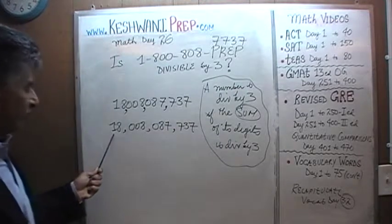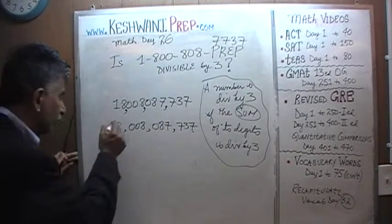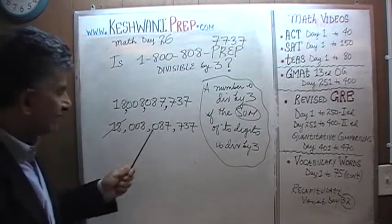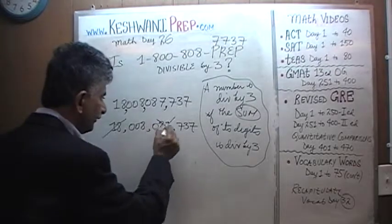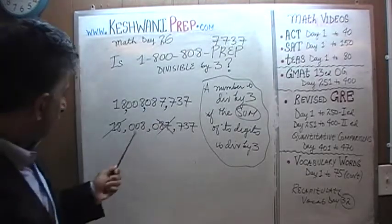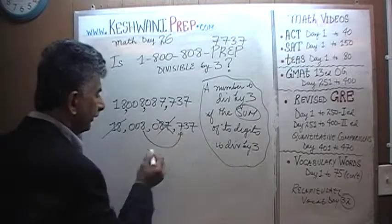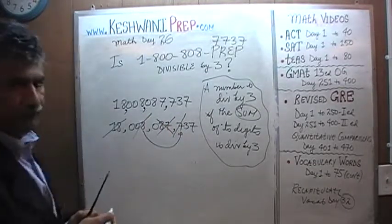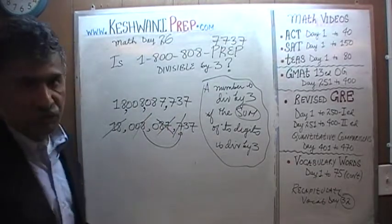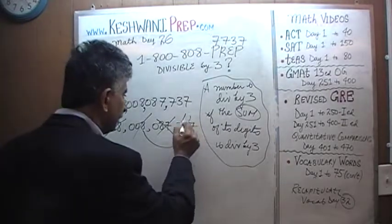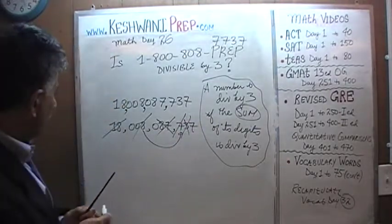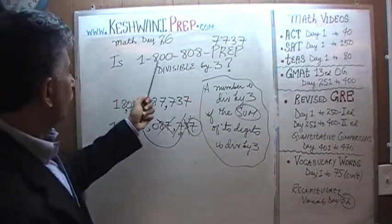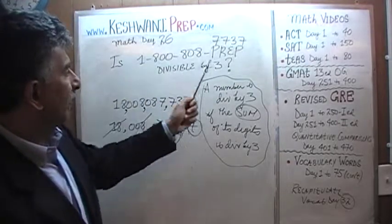For example here, oh there we go. We start out with 1 and 8. 1 plus 8 is 9. So these two digits play no role because they add up to 9 and 9 is divisible by 3. Oh I see 8 and a 7. 8 plus 7 is 15. So those two digits are not going to play any role. Oh I see another 8 and another 7. 8 plus 7 is 15 again. So those two digits are not going to play any role. Let's continue. Oh I see a 3. Of course 3 is divisible by 3, so that 3 actually plays no role. All we are left here is 7. Only thing that we are left here is 7. Therefore, is 1-800-808-PREP divisible by 3?